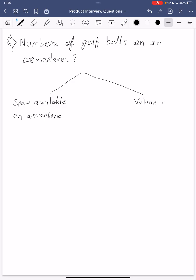Volume of the golf ball. Now volume of the golf ball is probably the function of the radius which is I think 4/3 πr³ and we can totally find what r for the golf ball is on the internet. Space available on aeroplane can be divided into two parts.